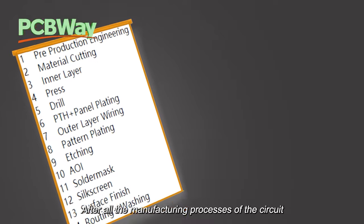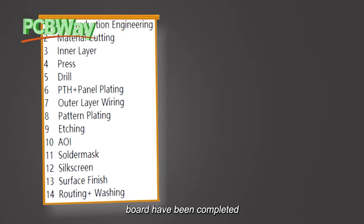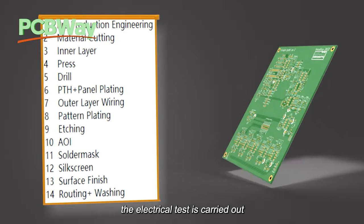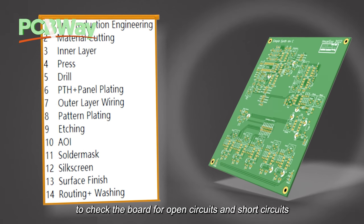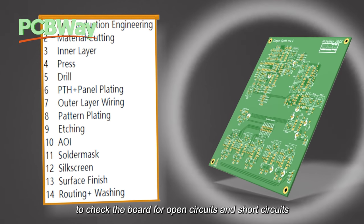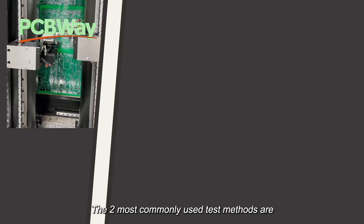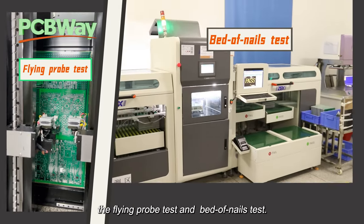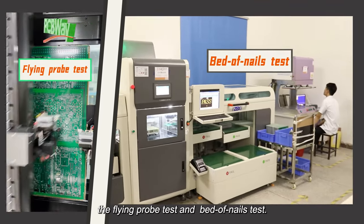After all the manufacturing processes of the circuit board have been completed, the electrical test is carried out to check the board for open circuits and short circuits. The two most commonly used test methods are the flying probe test and the bed of nails test.